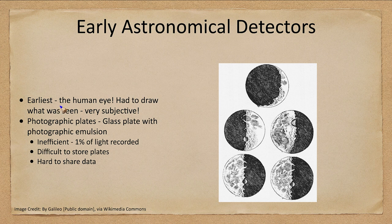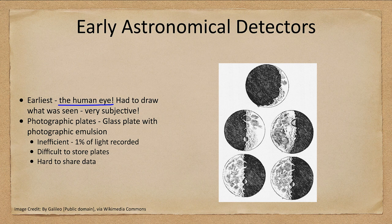The earliest thing we had was the human eye, and you could draw what was seen. For example, these are Galileo's drawings of the moon. The difficulty with those is that it's very subjective. Ten people drawing the same object would always draw things a little bit differently. Nobody sees everything exactly the same; people don't pick up on the exact same details, and while the overall structure might be the same, it would not be exactly the same from person to person.